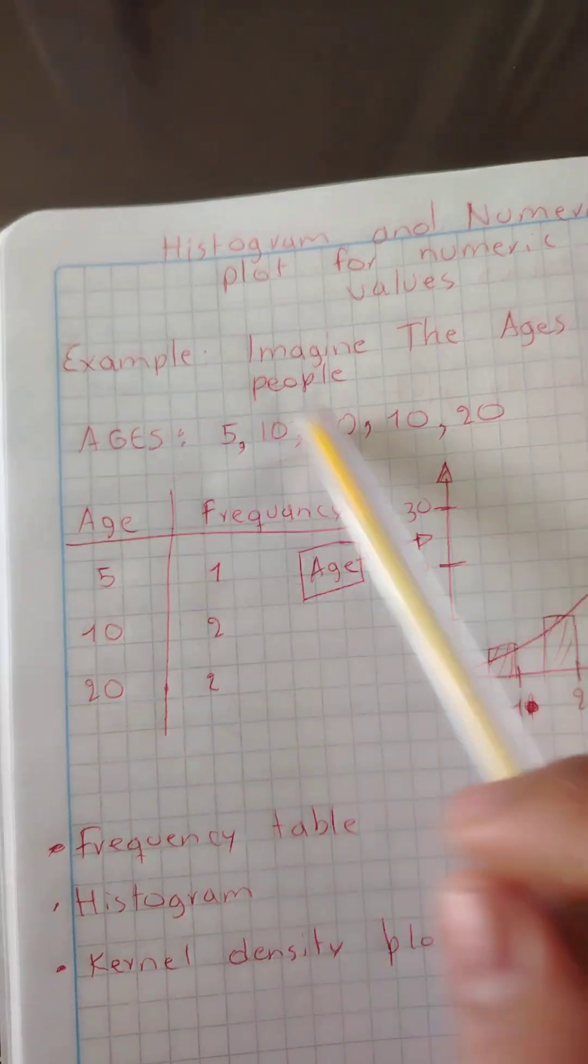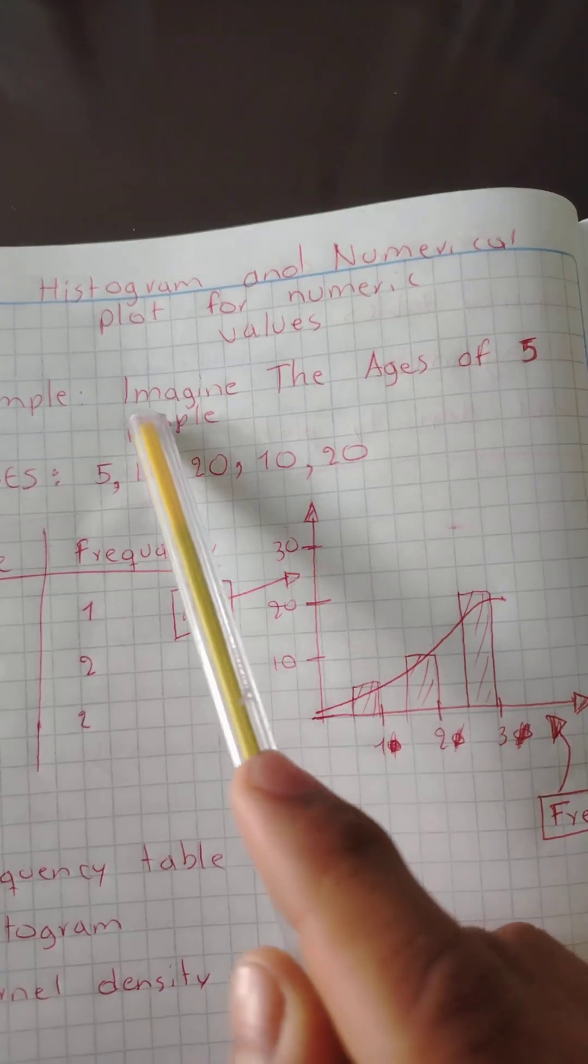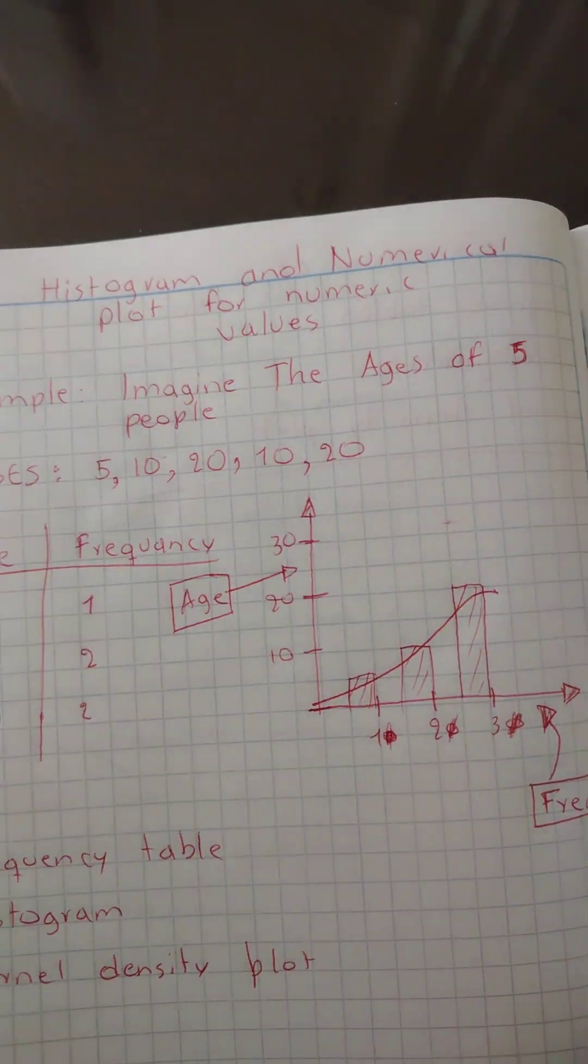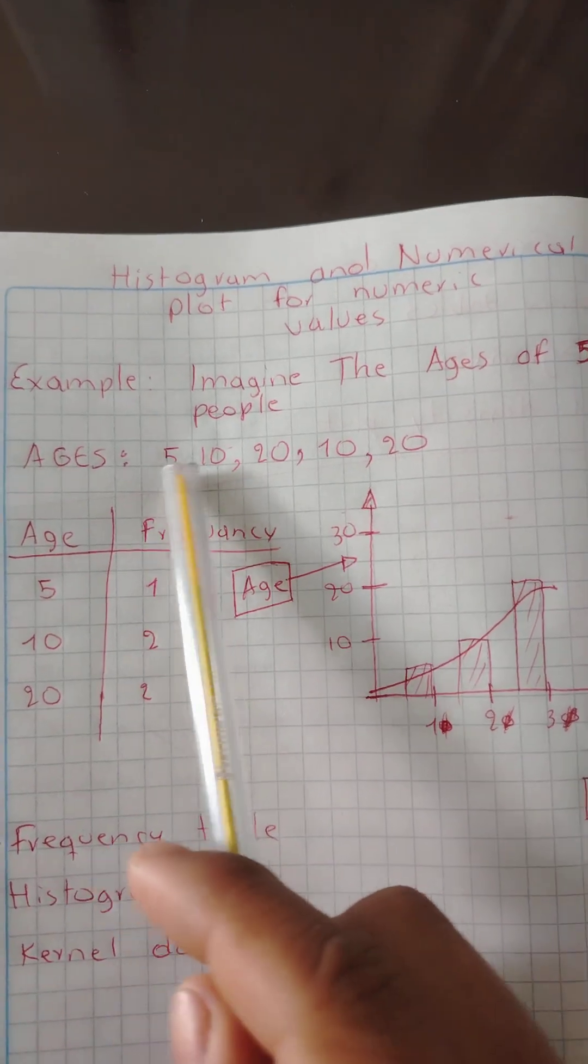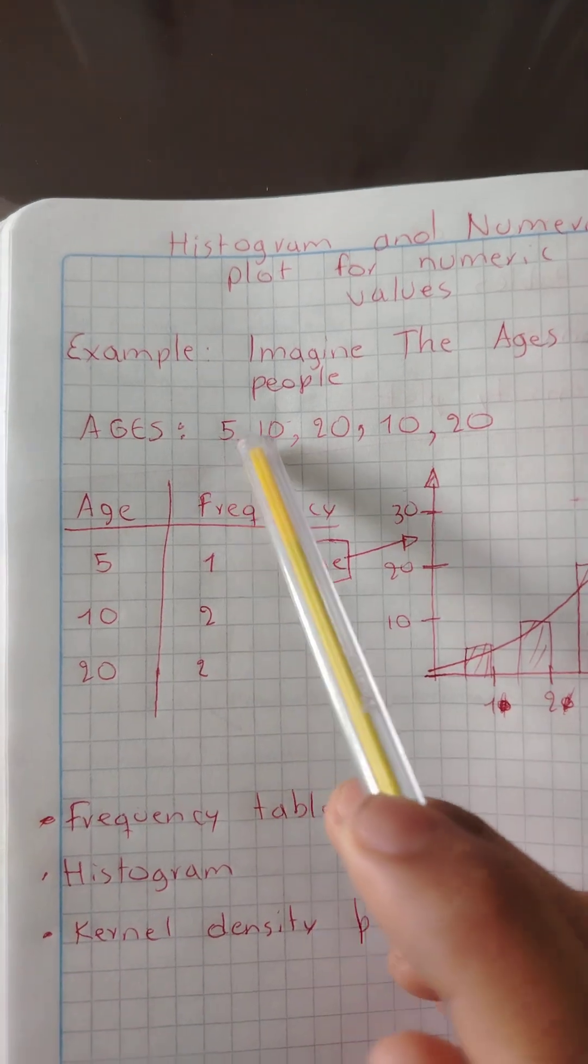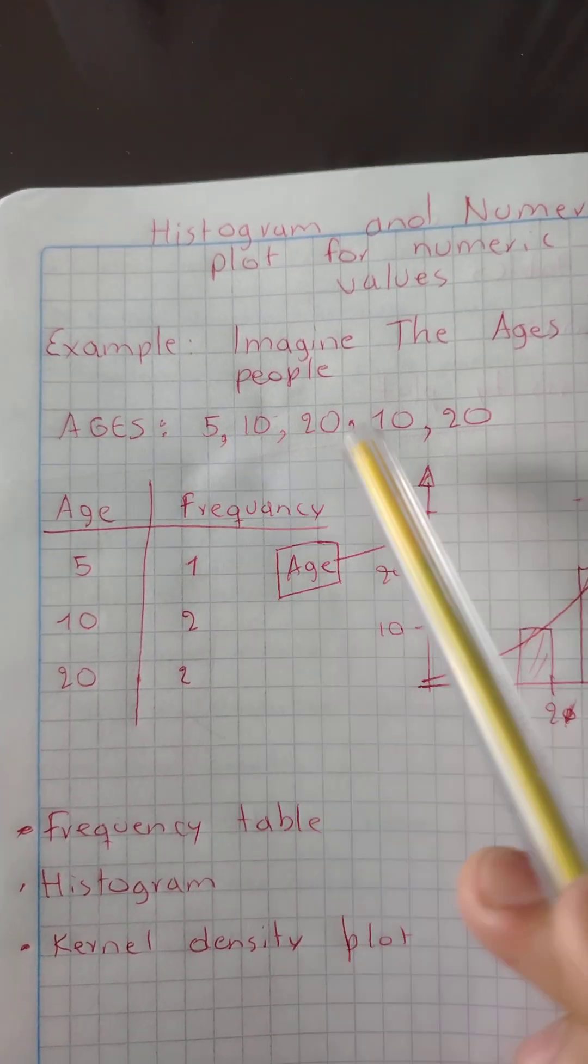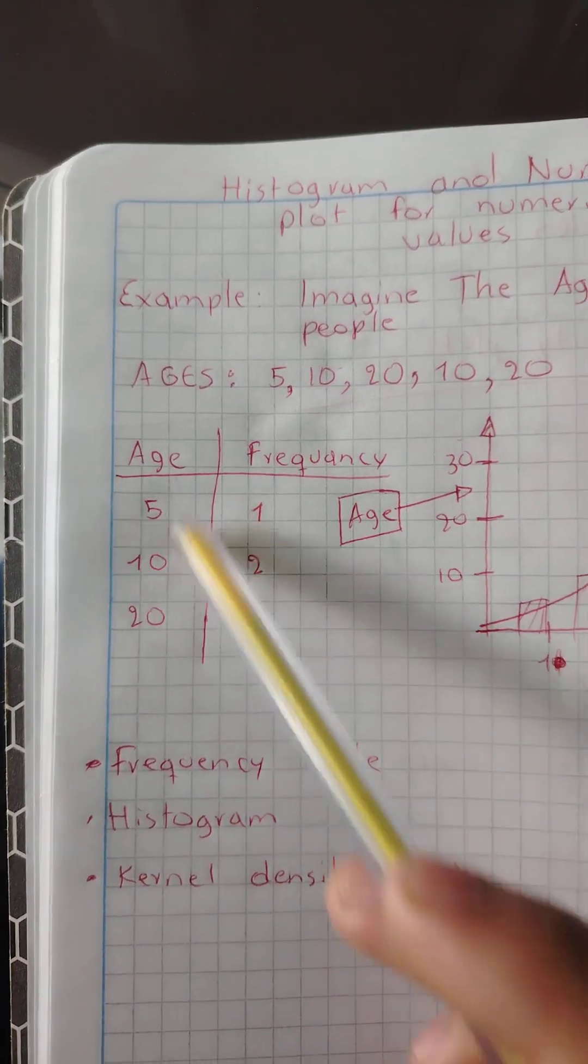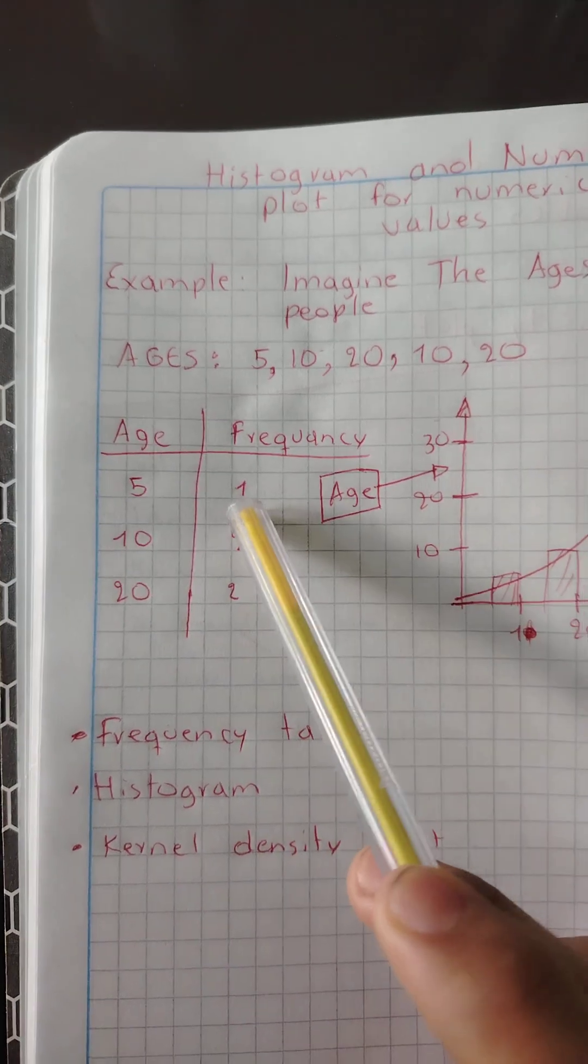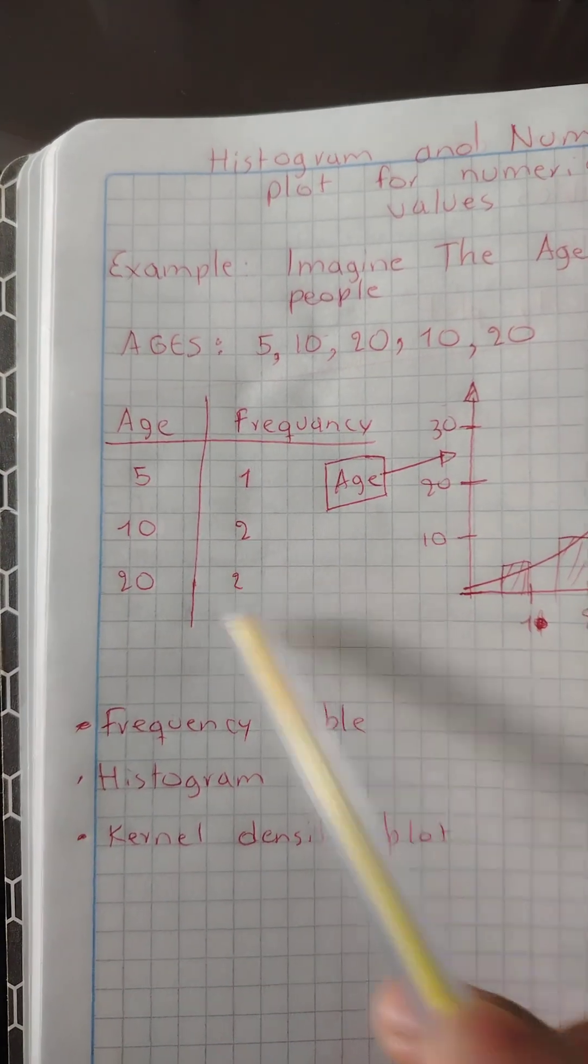The first thing I learned is to represent a frequency of ages. Let's see this example where we imagine five people. We're representing the ages of five people and their frequency - how frequent it is that a person has the age 5, 10, or 20. Here is the frequency: five got one, ten got two, and twenty got two as well.